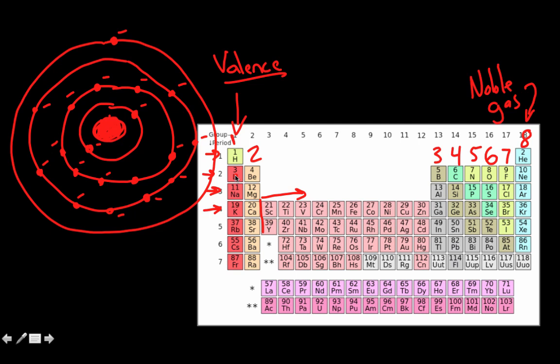Whereas you come over here to lithium, sodium, potassium, its outer energy level only has one. This energy level has seven. So if it has one, it's real easy to give that electron away when it reacts. If it has seven, it would be real easy to gain an electron when it reacts.